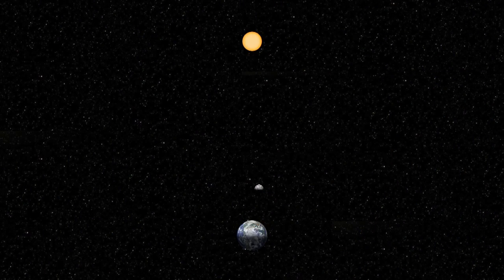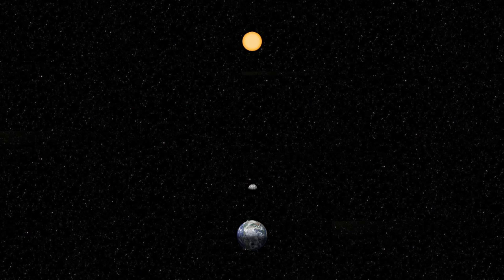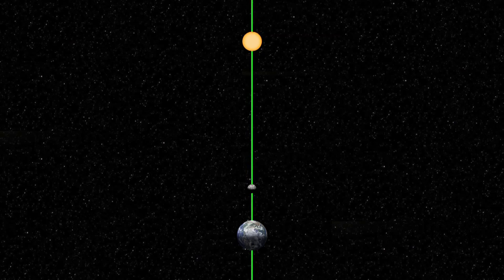Solar eclipses can only occur during the new moon when the moon is between the Earth and the Sun, and the Earth, Moon, and Sun form a straight line.